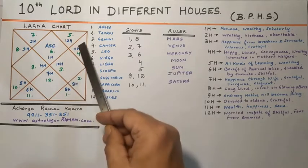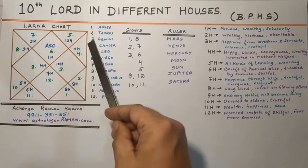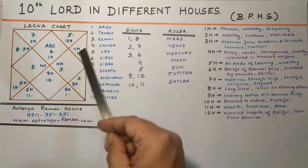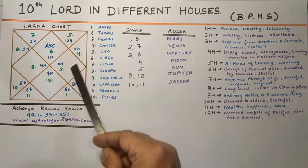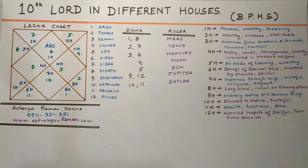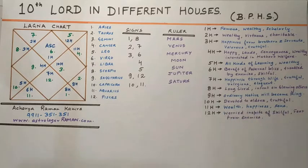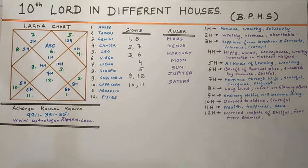If the 10th Lord is placed in the 11th house, the native would be endeared with wealth, happiness, and sons. He will be virtuous, truthful, and always delighted.